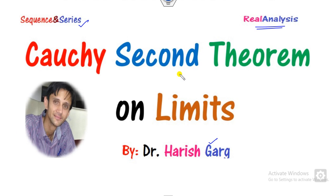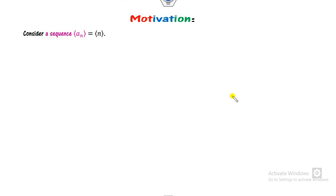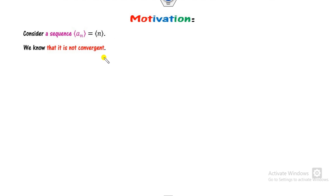Before we start with Cauchy's second theorem on the limits, let's start with some motivation for why there is a need for this theorem. If you have some sequence A_N, then we all know that this is a divergent series. How can you prove whether the sequence is convergent or not?